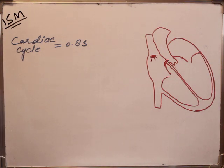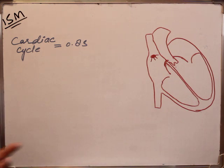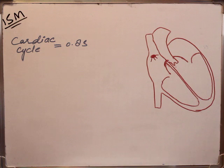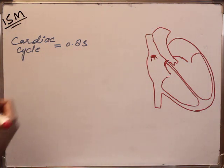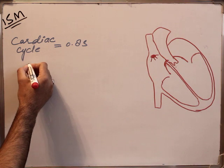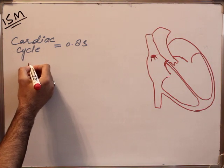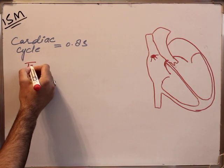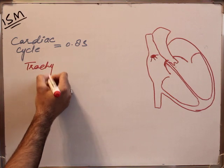In case the generation of stimulus or impulses from the pacemaker cells increases — due to certain diseases, hypertension, or other factors that increase the heart rate — the heart rate increases up to more than 100. This condition is called tachycardia.